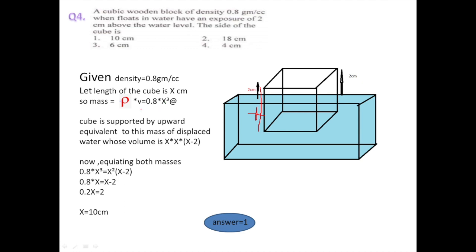According to Archimedes' principle, when a body is fully or partially submerged in a fluid, it experiences an upward force equal to the mass of the displaced water. The volume inside the water is x × x × (x − 2), since 2 centimeter is above the water, so below water it becomes (x − 2). Equating both masses — the mass of the block and the mass of displaced water — and solving the equation, x becomes 10 centimeter. So the side of the cube is 10 centimeter.